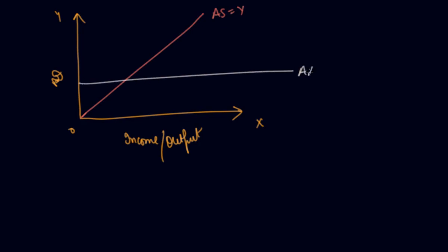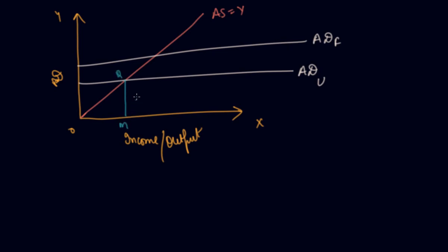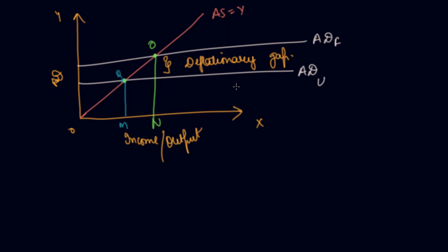Graphically, this is your AD under underemployment equilibrium, and this is your aggregate demand at full employment equilibrium. So this equilibrium point corresponds to involuntary unemployment in the economy, and this other equilibrium point corresponds to full employment. These are the two equilibria, and the difference between ADU and ADF is the deflationary gap.